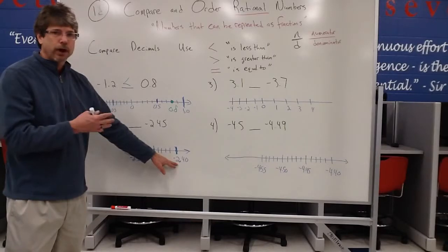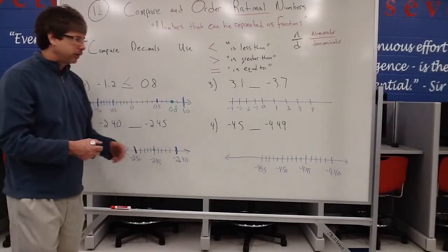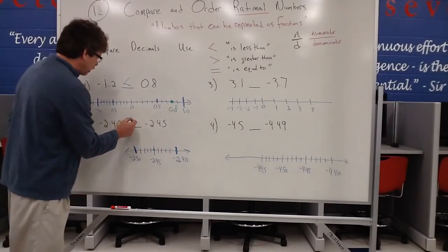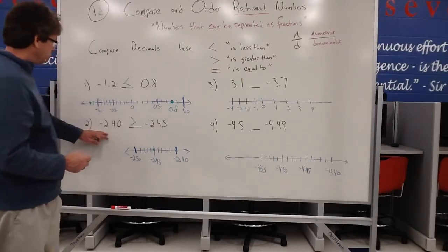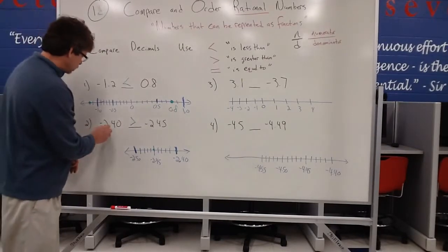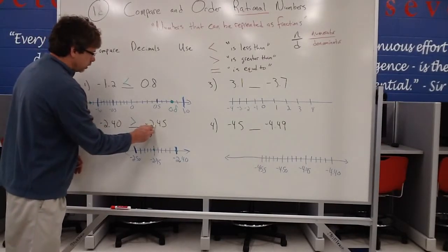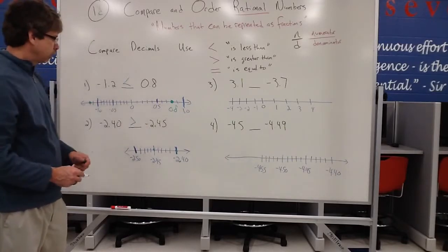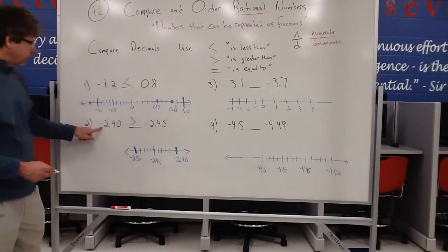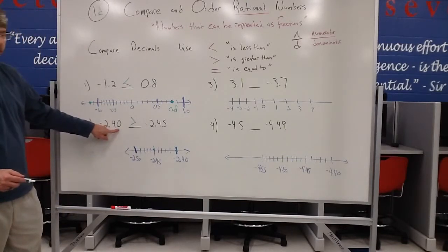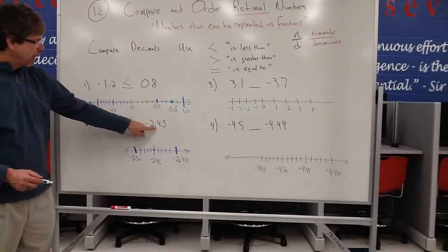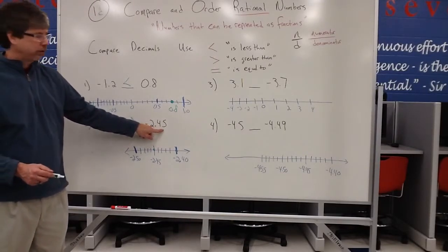since negative 2.40 is to the right, it's our bigger value. So this would be a greater than symbol. So negative 2.40 is greater than negative 2.45. Or, negative 2 and 40 hundredths is greater than negative 2 and 45 hundredths.